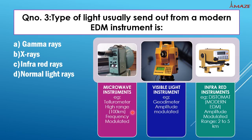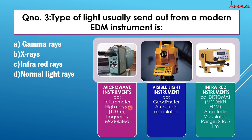Microwave instruments have a very high range of about 100 km and are frequency modulated. Visible light instruments, such as the geodimeter, are amplitude modulated and have a smaller range. Infrared instruments are also amplitude modulated and have a range of 2 to 5 km. So microwave instruments are frequency modulated, while visible light and infrared instruments are amplitude modulated.